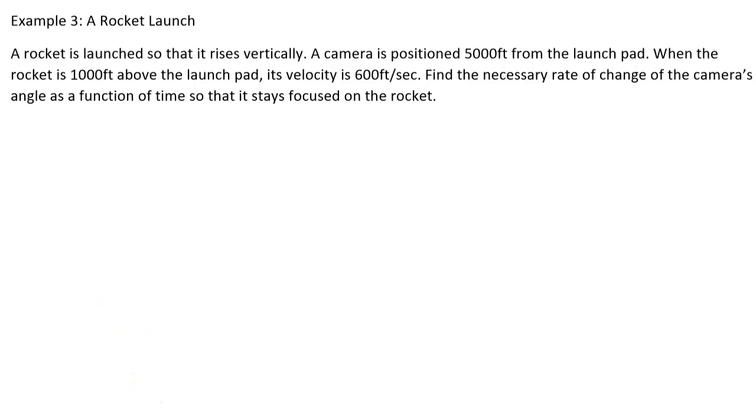Okay, example three. A rocket is launched so that it rises vertically. A camera is positioned 5,000 feet from the launch pad. When the rocket is 1,000 feet above the launch pad, its velocity is 600 feet per second. Find the necessary rate of change of the camera's angle as a function of time so it stays focused on the rocket.